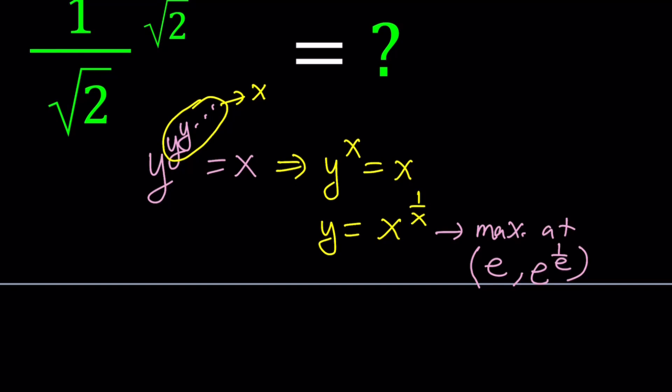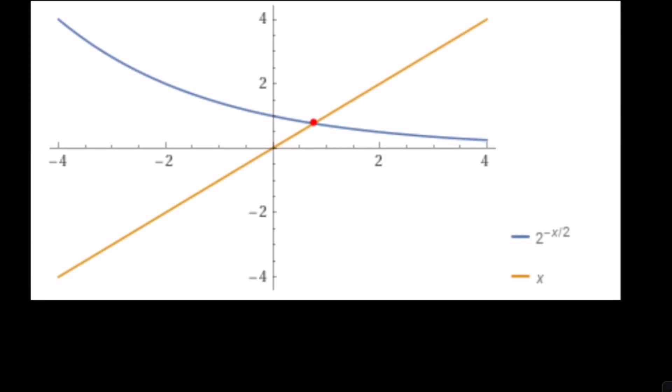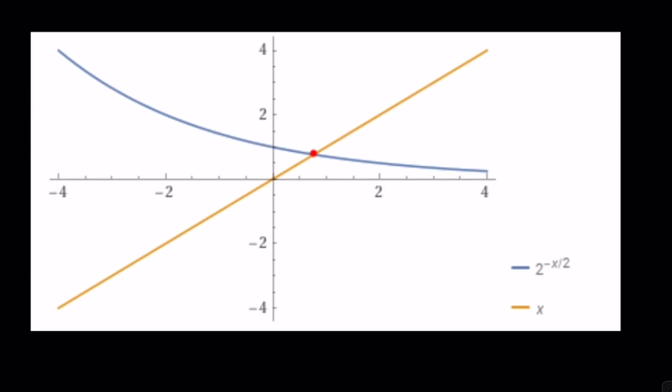Obviously, x would be the e and y would be the e to the power 1 over e. So what it means is that if your y value exceeds that, then you're going to get a divergent expression, which is not going to converge, okay?